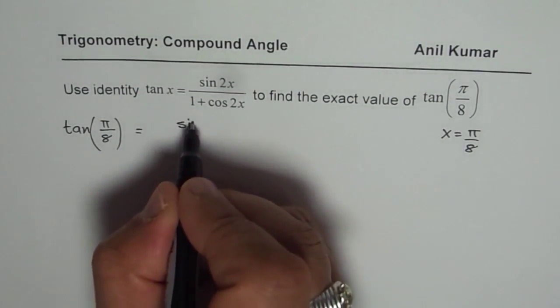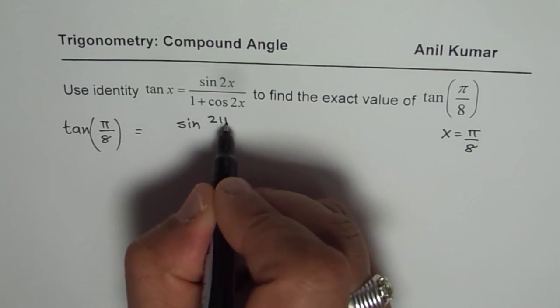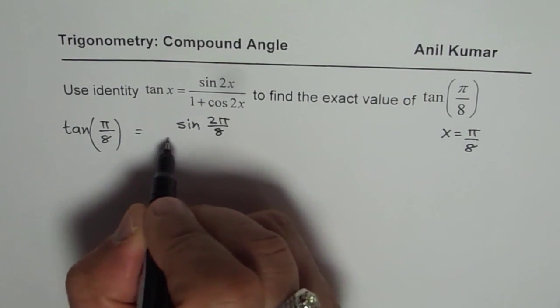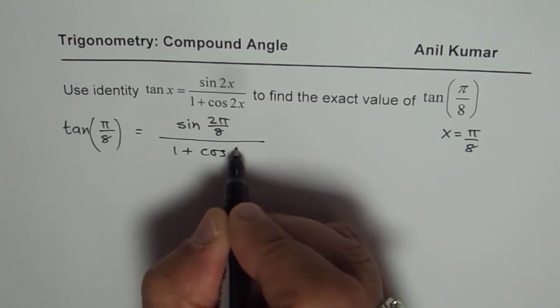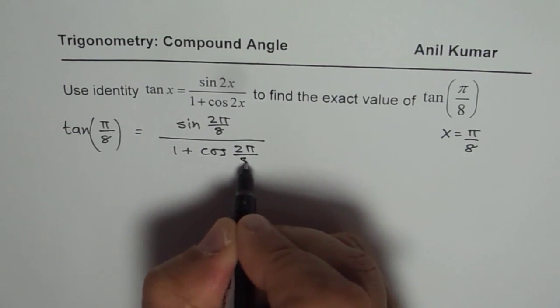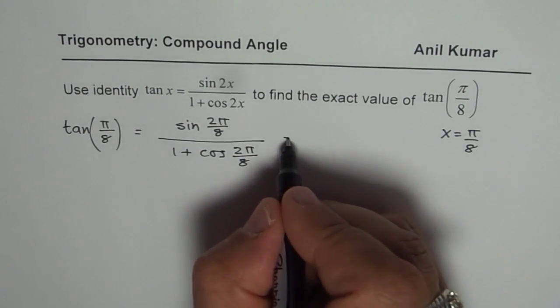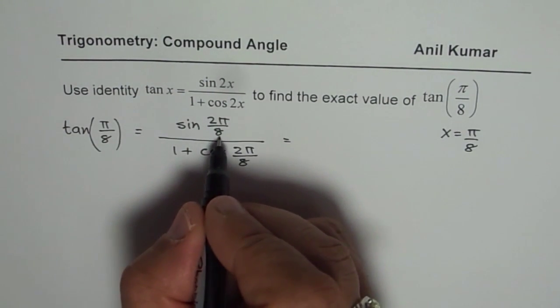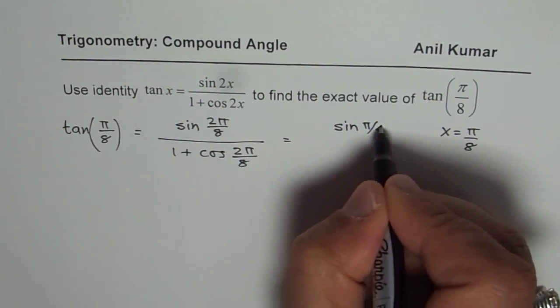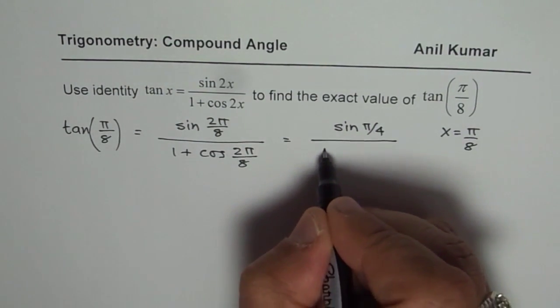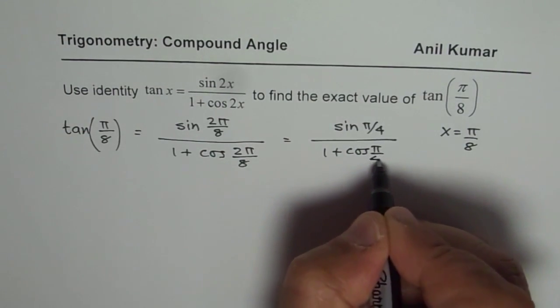So we get sin of 2 times pi by 8 divided by 1 plus cosine of 2 times pi by 8. 2 pi by 8 is pi by 4. So we could write this as sin pi by 4 over 1 plus cos pi by 4.